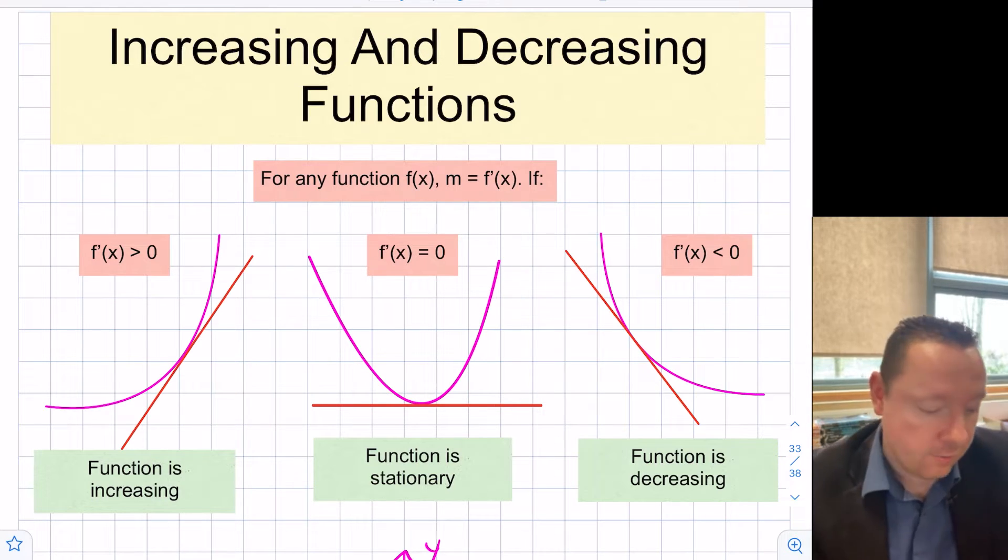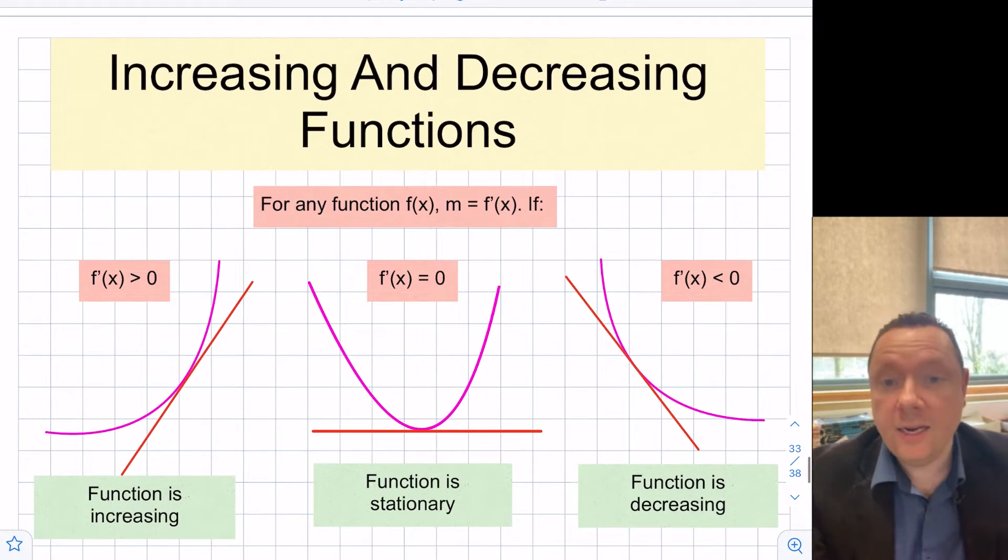Now if the derivative is greater than zero, it means we have a positive derivative and the function is increasing. If the derivative is zero, we've got a stationary point, a turning point. And finally, if we get a negative derivative, if the derivative is less than zero, it means the function is decreasing.